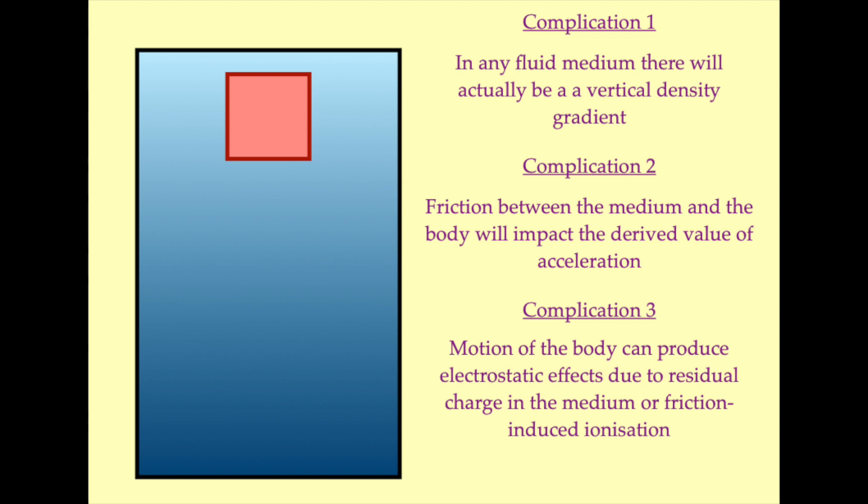The second problem that arises is interaction between the test mass and the medium in the chamber. There will be frictional effects, there may be currents that operate in the medium that will impact the motion of the test mass. Contact between the test mass and the medium will also result in ionization that may have electrostatic impacts on the motion of the test mass. All of these effects need to be reduced so that we can achieve the most accurate results possible.